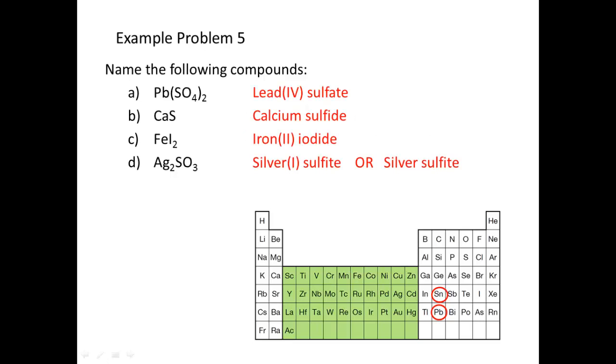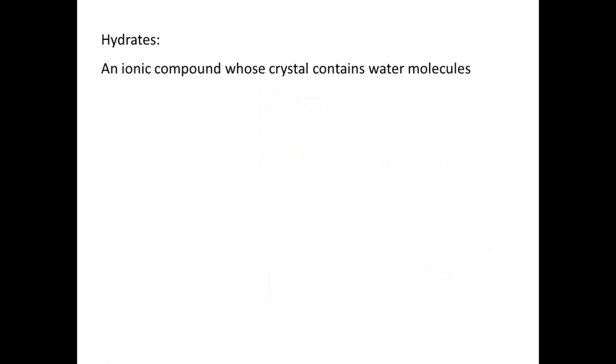Here are the answers. Notice that for D, I have included the answer with or without the Roman numeral. The reason for this is because silver is one of the two that I told you that commonly only has one charge. Silver and zinc, 99% of the time, will only have one charge. Silver having a plus one charge or zinc having a plus two charge. So, I am flexible with whether you include a Roman numeral or not with those two, silver and zinc.